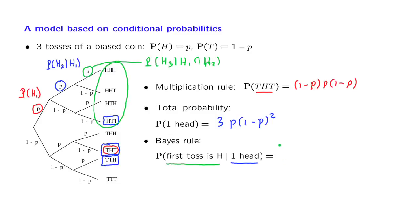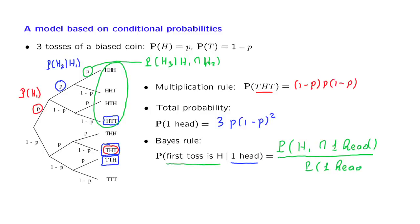But let us derive this answer formally using the definition of conditional probabilities. The conditional probability is the ratio of the probability that both events happen divided by the probability of the conditioning event — the probability of one head. The probability that both events happen, meaning exactly one head and the first toss is heads, corresponds to the outcome heads-tails-tails, with probability p times (1 minus p) squared. The denominator is 3p times (1 minus p) squared, giving a final answer of one third.